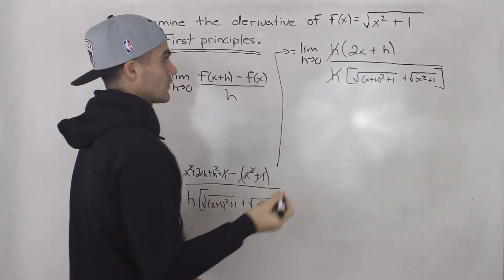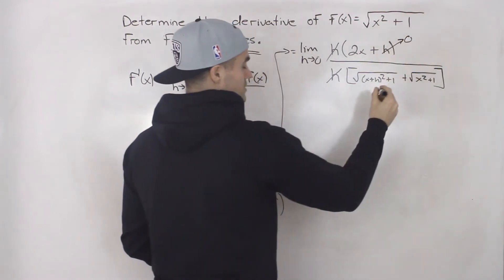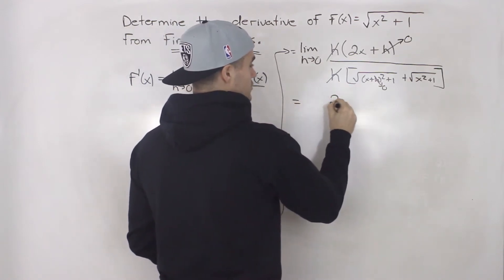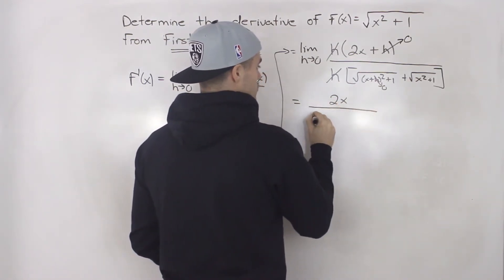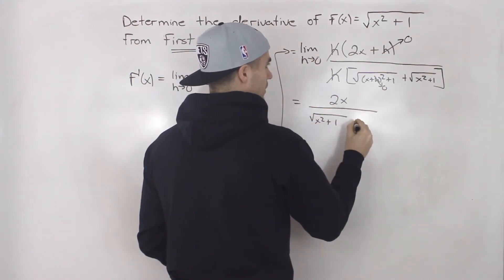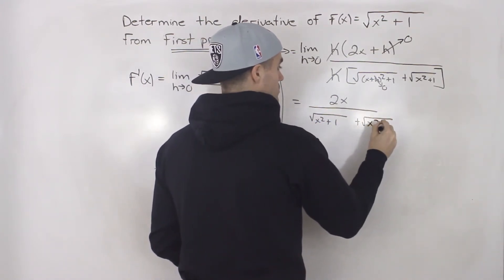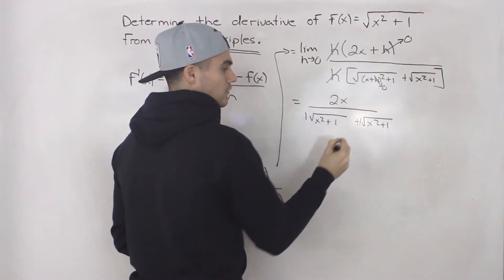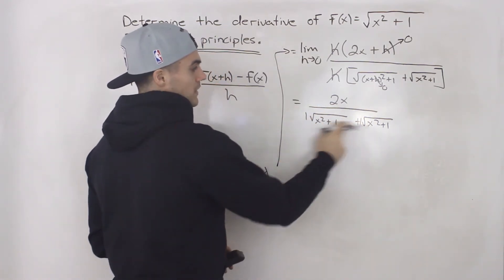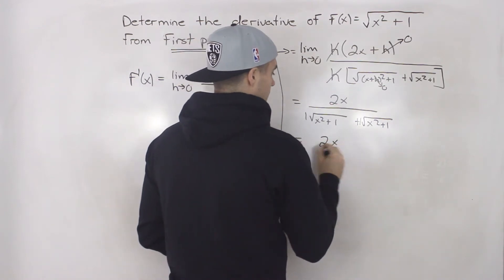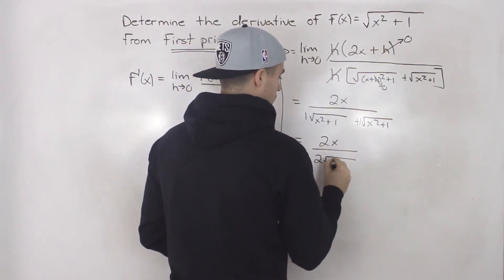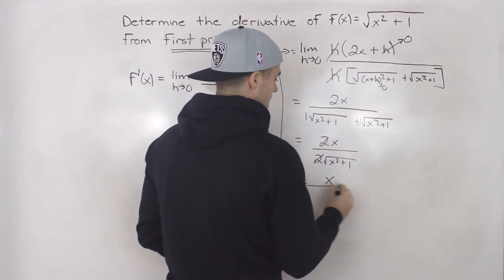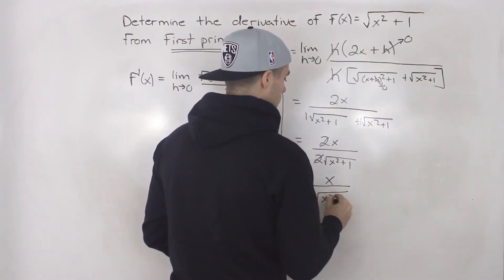The h's cancel out, and now we can plug in zero for h. The h in the numerator goes to zero and the h in the denominator goes to zero. We're left with 2x all over the square root of x squared plus one, plus the square root of x squared plus one. These two are like terms each with a coefficient of one, so adding them gives two times the square root of x squared plus one. The twos cancel, and our final answer is x over the square root of x squared plus one.